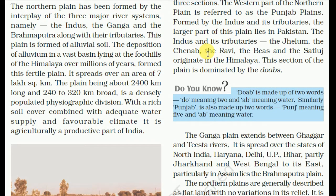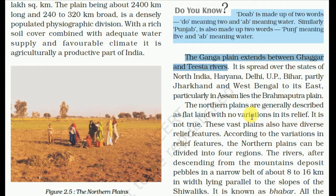The word 'Doab' is made of two words — 'Do' meaning two, and 'Aab' meaning water. So Doabs are the plains between two rivers. The Ganga Plain extends between the Ghaggar and the Teesta rivers, spread over the states of Haryana, Delhi, Uttar Pradesh, Bihar, Jharkhand, and West Bengal to the east. Particularly in Assam lies the Brahmaputra Plain.